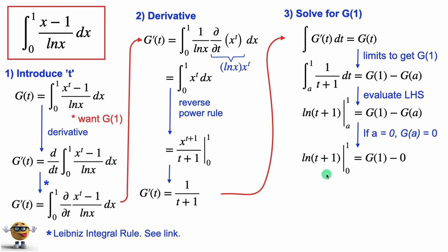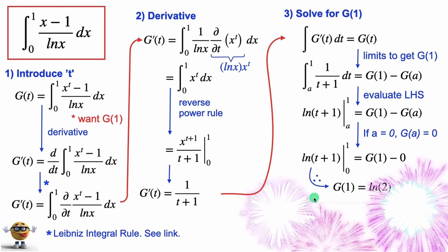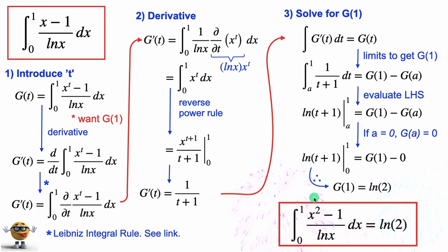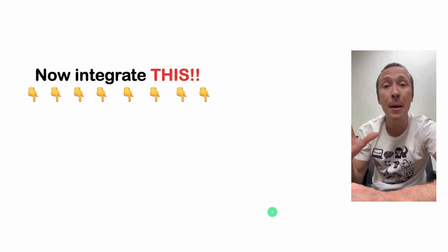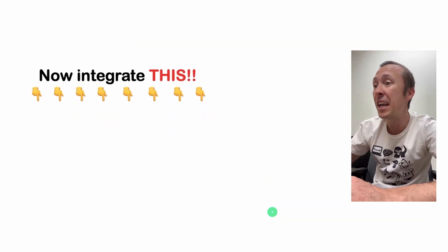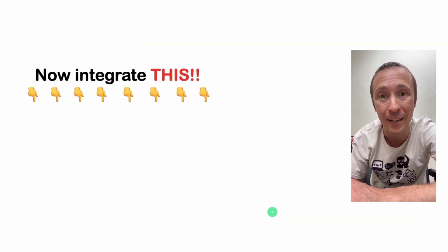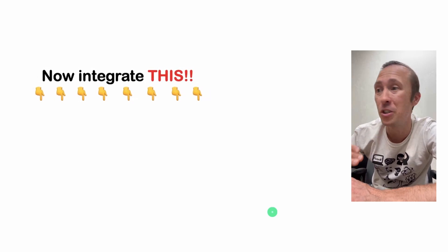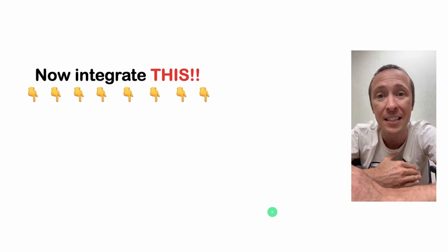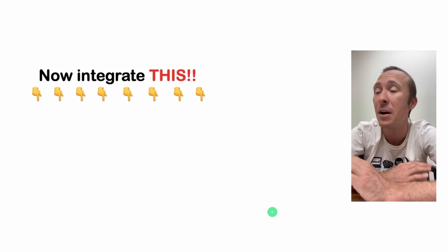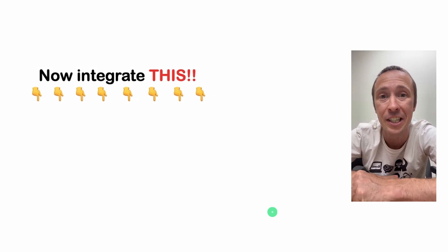So let's set a = 0. Then the whole thing is g(1) minus 0, and that is our integral in all its glory. The complicated integral equals ln 2 — pretty sweet. Now that might be okay, but check out this next one — it's a little bit more complicated. The more integrals you do, the better you'll get. They're not easy to learn, but you can survive. Hang in there. Cheers.